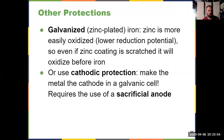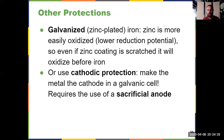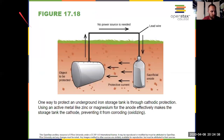Another method is cathodic protection, where you make whatever metal you're trying to protect the cathode, so you don't have to worry about it being oxidized. You have to have something else you're willing to sacrifice as the anode — a sacrificial anode. When doing cathodic protection, you periodically monitor and replace those anodes as necessary. It's used underground in things like storage tanks, pipes, and hot water heaters. You also see it used with ships.